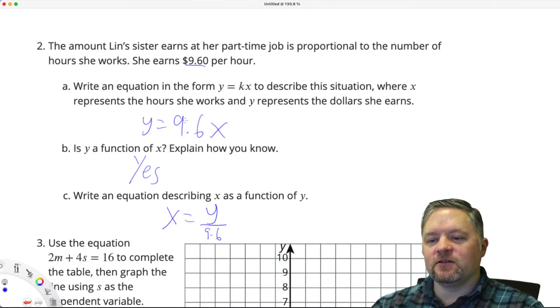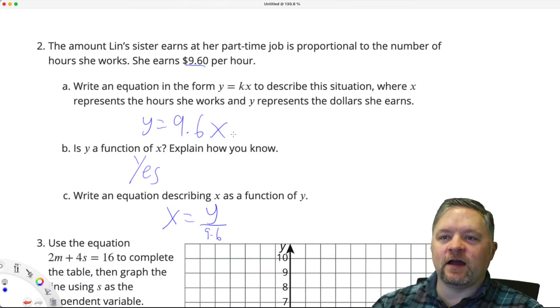Because if I look at this, if I wanted to get the X all by itself, if I want to isolate the X, I have to divide each side of this equation by 9.6. It would cancel out on this side. We're left with just X. On this side, we'd have Y divided by 9.6.